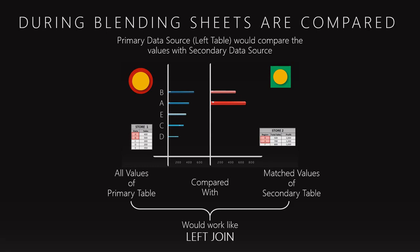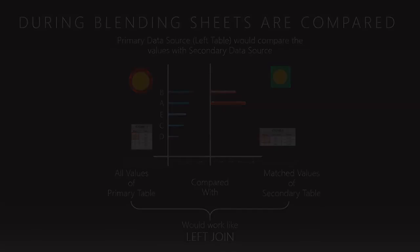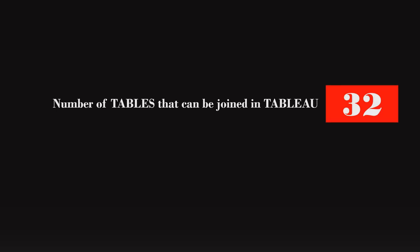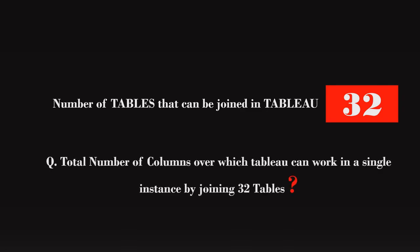So now you should be clear about what joins, union and blending are, though where to implement them will be covered in the next video. Before completing, I mentioned a question at the start: what is the maximum number of tables we can join in Tableau? The answer is 32. Remember, the maximum number of tables that can be joined in Tableau is 32. I also asked about the maximum number of columns one table can have, which I showed at the start of the video. Using that number and 32 — the maximum number of joinable tables — find the maximum number of columns Tableau can work with simultaneously in one instance.